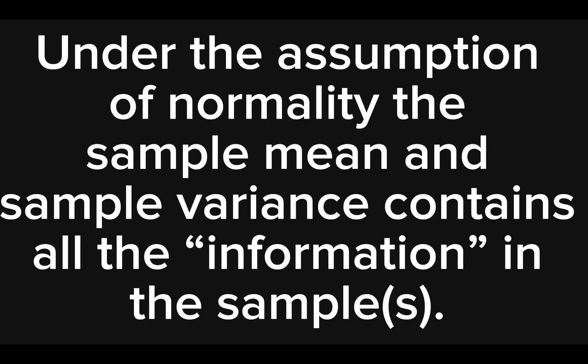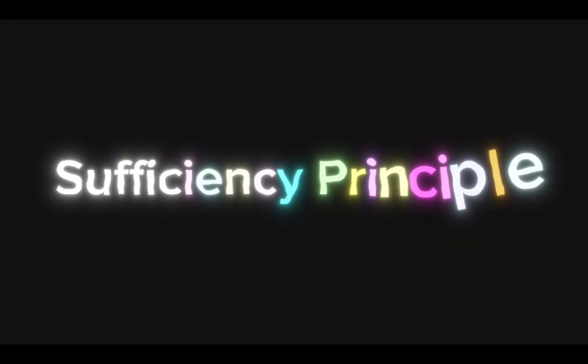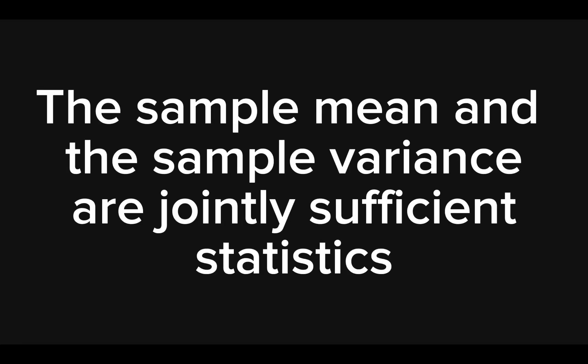If we are dealing with normally distributed populations, then the sample mean and the sample variance contain all the information from the populations. Statisticians have a term for this concept — it is called the sufficiency principle. In the language of statistics, statisticians say that under the assumption of normality, the sample mean and the sample variance are jointly sufficient statistics.